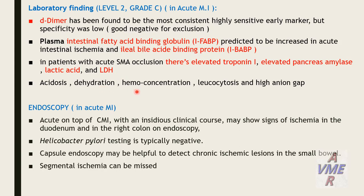Acidosis, dehydration, hemoconcentration, leucocytosis, and high anion gap are common laboratory findings. Endoscopy in acute mesenteric ischemia is a predictor for assessing intestinal viability. Acute on top of chronic mesenteric ischemia may show signs of ischemia in the duodenum and right colon on endoscopy. Fecal occult blood testing is typically negative. Capsule endoscopy may be helpful to detect chronic ischemia lesions in the small bowel, though segmented ischemia can be missed.